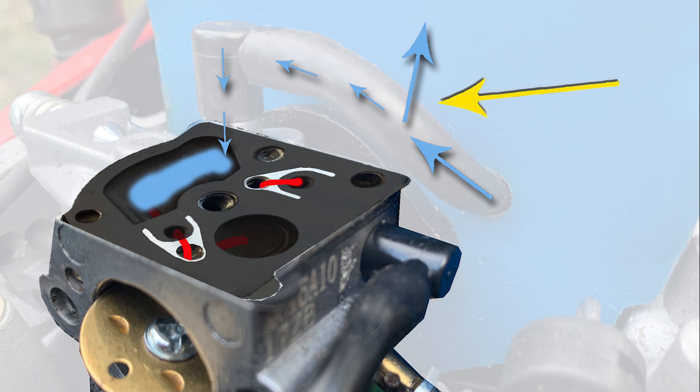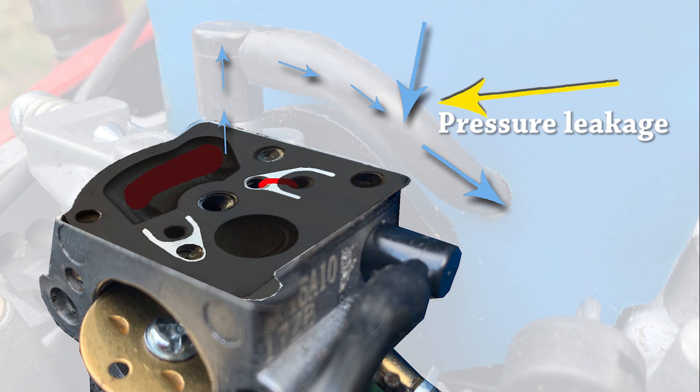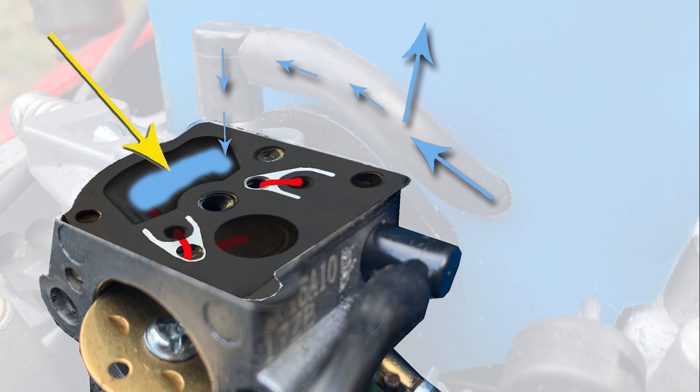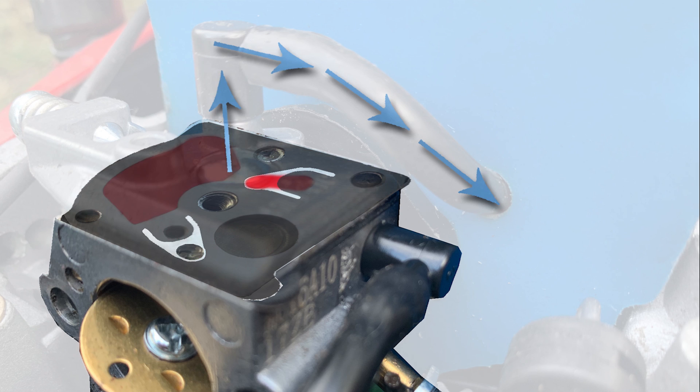So if this impulse line is damaged, it's worn through or punctured in some way, or it's not connected properly, then we can see that the fuel pump is not going to work properly, if at all. And again, there's going to be issues getting the fuel through the carburetor the way it should do. So a healthy pulse line and a fully functioning fuel pump is a must.